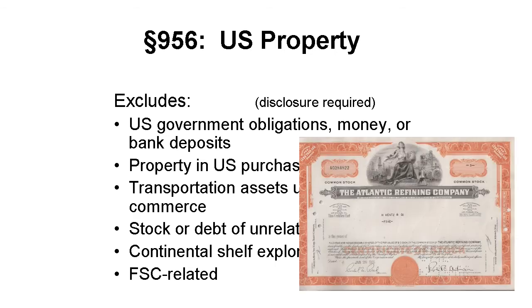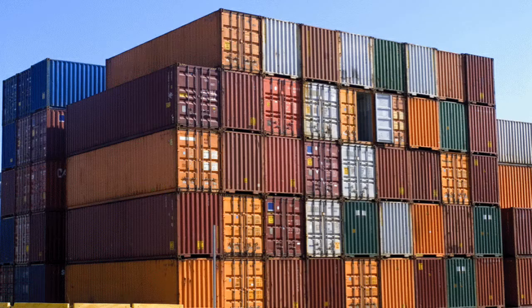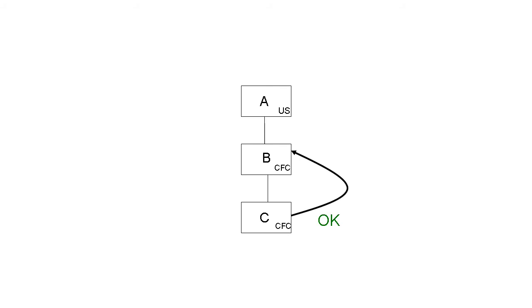Thus, the CFC's money, bank accounts, and investments in unrelated persons' stock or debt are not considered U.S. property — even for investments in unrelated U.S. corporations. In addition, certain things are excluded if they are related to international commerce, such as property the CFC owns and is in the process of exporting, and transportation assets used in foreign commerce, like containers. Loans to or investments in non-U.S. persons do not trigger Section 956, even if the persons are related. Thus, a loan to a fellow CFC does not cause a 956 inclusion.